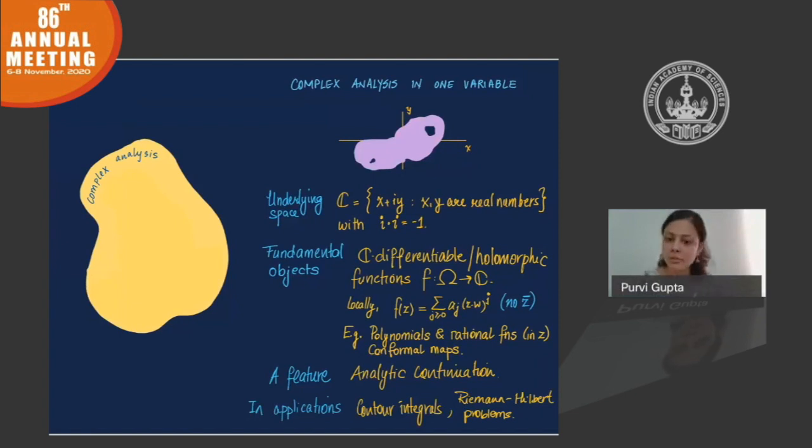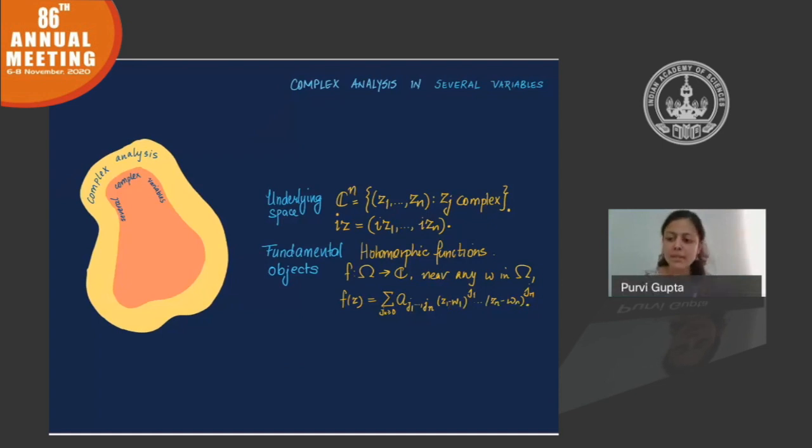What I work in is a multivariate version of this. Instead of complex numbers, I look at complex vectors. I can still define holomorphic functions. These are now functions in n complex variables. Once again, you can think of holomorphicity in terms of local power series representations, but now you're looking at power series in multivariables.